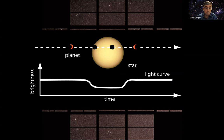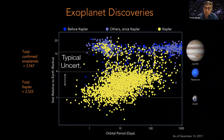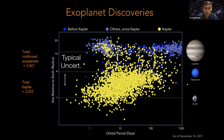Over time, Kepler ended up discovering thousands of planets. As of December 14, 2017, this plot shows planet size relative to Earth on the y-axis versus orbital period on the x-axis. The yellow points are those discovered by Kepler. The vast majority of these planets are between the size of Earth and the size of Neptune, which is particularly interesting because we don't have any analogs for these planets within our own solar system.